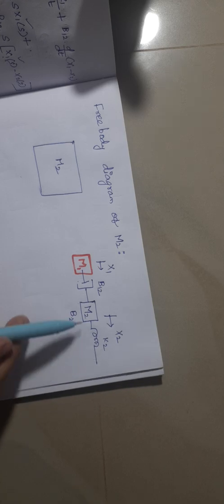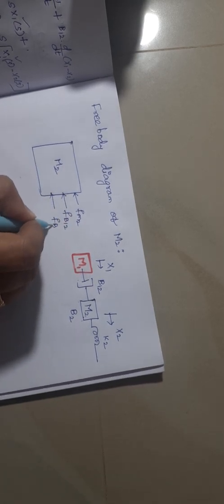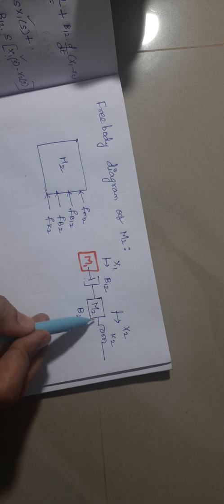Now drawing the free body diagram of mass m2. Mass m2 is connected with b12, b2, and k2. Apart from these three elements, mass m2 also produces one opposing force, making totally four opposing forces: fm2, fb12, fb2, and fk2. There is no direct applied force on m2, so the applied force is 0.